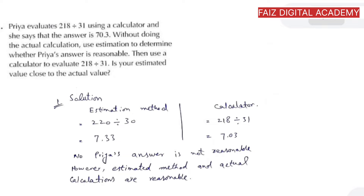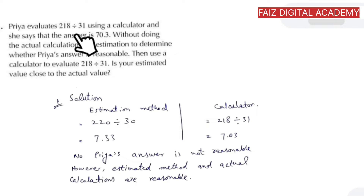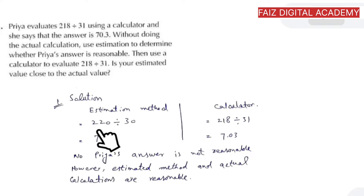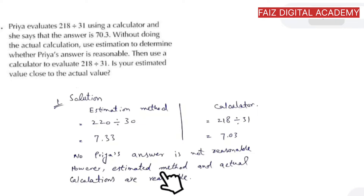I have solved this question. We have to solve it by two methods: the estimation method and the calculator method. In the estimation method, we first round off the values. 218 is rounded to 220 and 31 is rounded to 30. Then 220 divided by 30 gives 7.33. On the other hand, if we use a calculator and divide the actual values, we get 7.03.